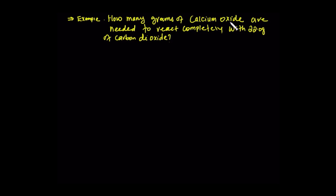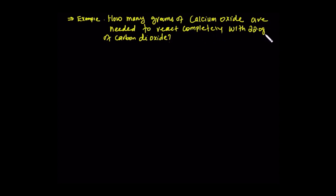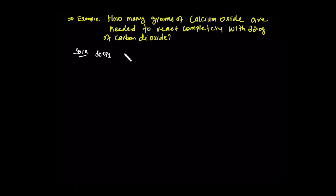How many grams of calcium oxide are needed to react completely with 22 grams of carbon dioxide? How many grams of calcium oxide are needed to react completely with 22 grams of carbon dioxide? Step 1: Write the balanced chemical equation. Let's see — calcium oxide reacts with carbon dioxide.